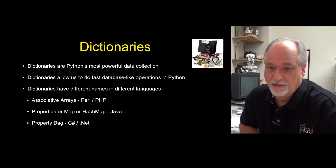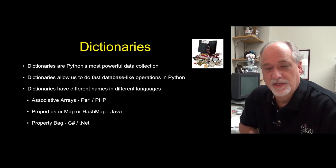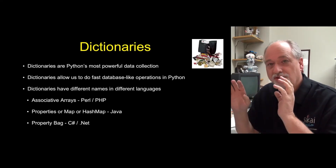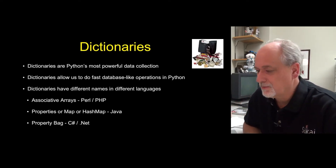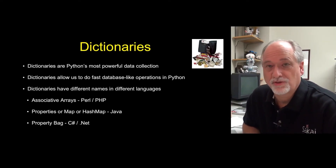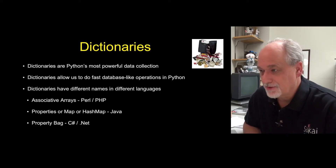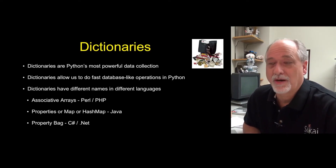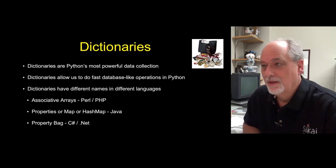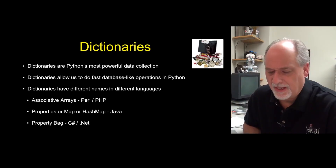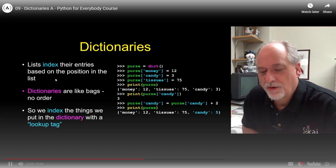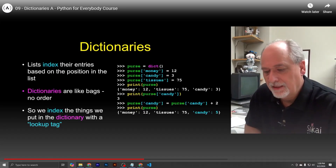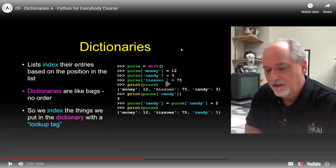Dictionaries are generally referred to as associative arrays - they're like lists but with keys. The 'associative' means the association between a key and a value, whereas in a list there's a position and a value. Most modern programming languages have this notion of associative arrays. They're all key-value pairs.